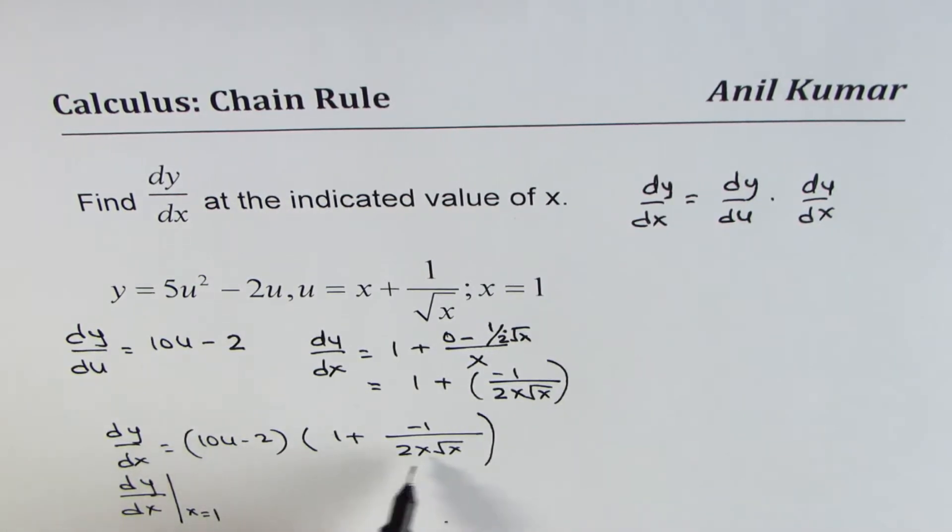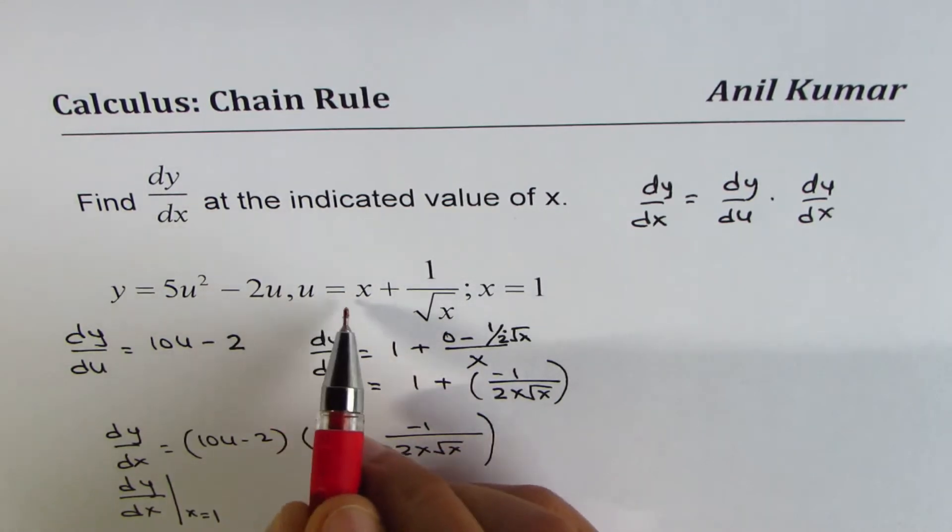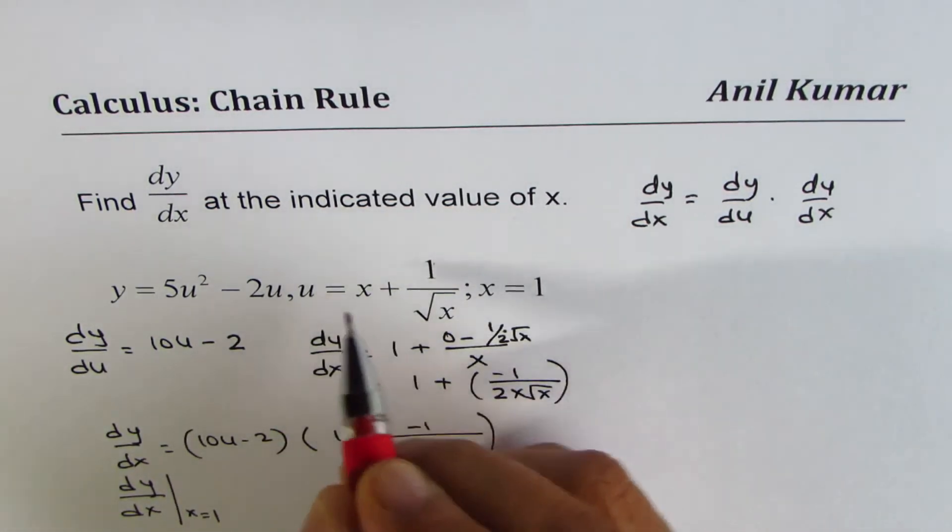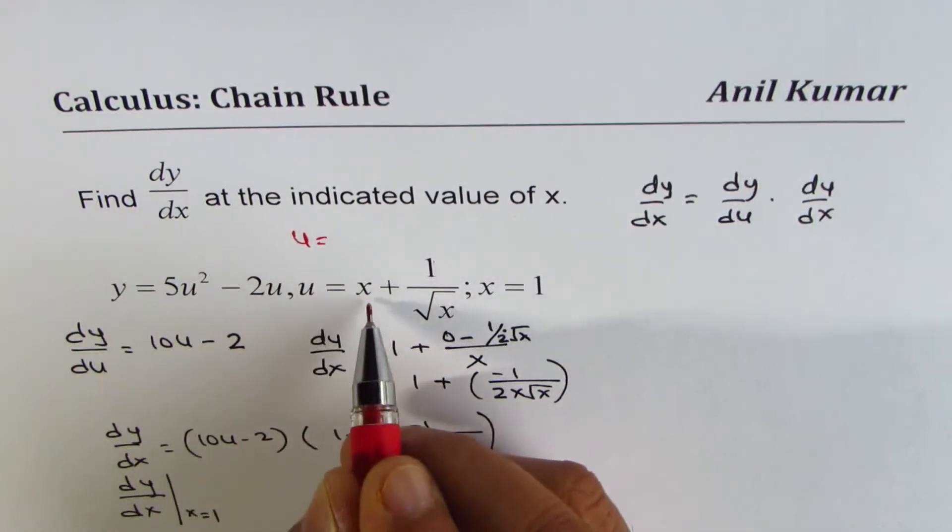Now, we need to, before plugging in 1, we have to find what u is when x is 1. So from the given condition, we know u is x plus 1 over square root x. So what is u when x is 1?